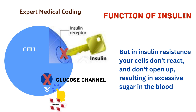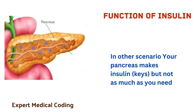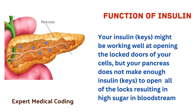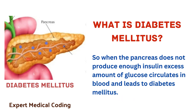But in insulin resistance, your cells don't react and don't open up, resulting in excessive sugar in the blood. In other scenarios, your pancreas makes insulin, but not as much as you need. Your insulin might be working well at opening the lock doors of your cells, but your pancreas does not make enough insulin keys to open all of the locks, resulting in high sugar in bloodstream. So, when the pancreas does not produce enough insulin, excess amount of glucose circulates in the blood and leads to diabetes mellitus.